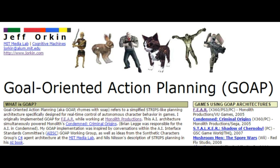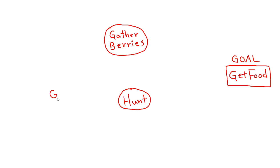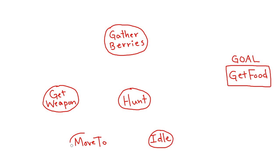In any case, the basic idea behind GOAP is that we want to add as many actions as we want and have the AI build a plan — a sequence of actions to execute in order to reach a goal. So let's give an example. Let's say our goal is to get food. We have the actions: gather berries, hunt, get weapon, move to, and idle. These are the actions the AI has available, and its goal is to get the most food in the most efficient way possible.